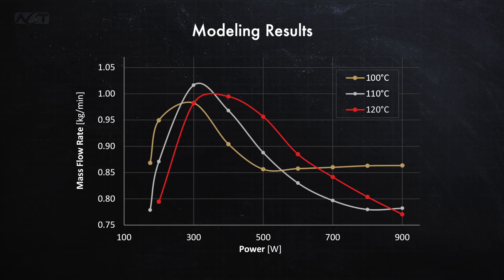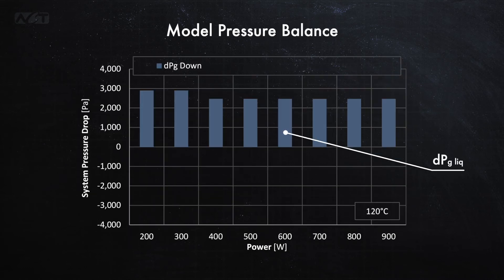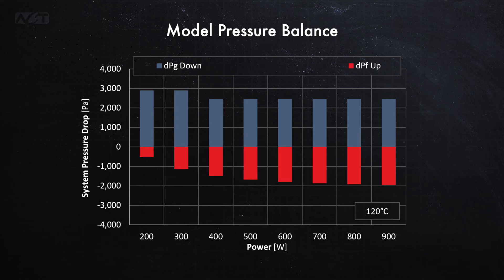So why do we see this increase in flow rate followed by a decrease at a higher power? The answer lies in changes in pressure drop around the loop. To illustrate this, let's look at the liquid gravitational head versus power for the 120 degrees Celsius case. Since the total system pressure must be balanced, we know that there must be negative pressure drops balancing out this liquid head. The first of these pressure drops is the frictional pressure drop in the two-phase flow between the evaporator and the condenser.